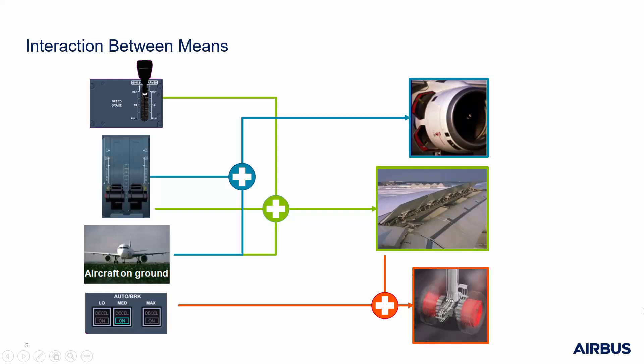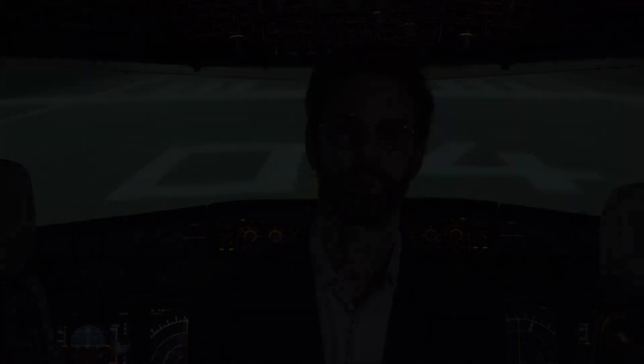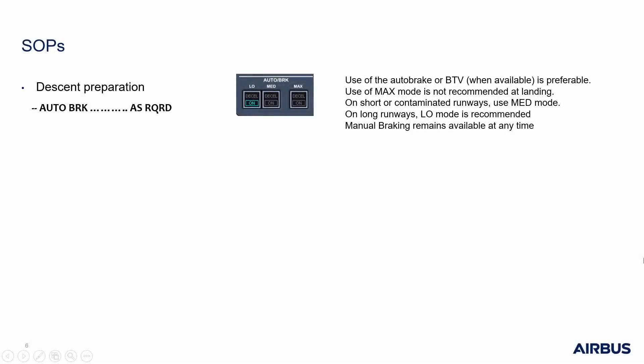Finally, the thrust reversers are deployed by the flight crew after main gear touch down. To ensure that deceleration means activate properly, Airbus provides the steps to follow in the standard operating procedures. During descent preparation, the pilot flying selects the appropriate braking mode. Use of the autobrake or BTV when available is preferable. Obviously, manual braking remains available at any time.